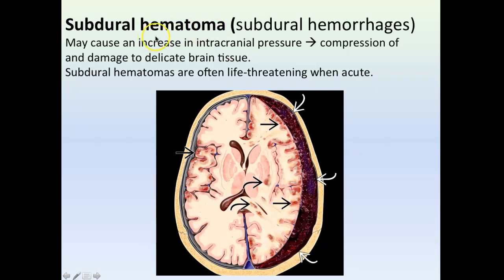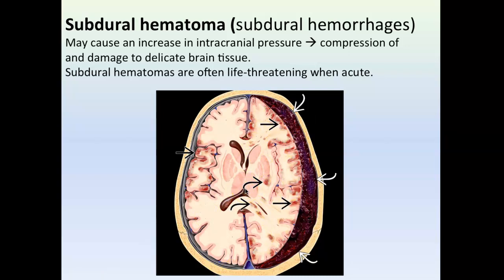A hematoma is a bruise — any broken blood vessel where blood gets trapped. In the brain, you can't see it through the skull, but the blood can fill the subdural space and compress the brain. The brain is very soft — about the consistency of tofu. Any pressure on it can deform and compress it, which is extremely dangerous. That is a subdural hematoma, associated with the subdural space.